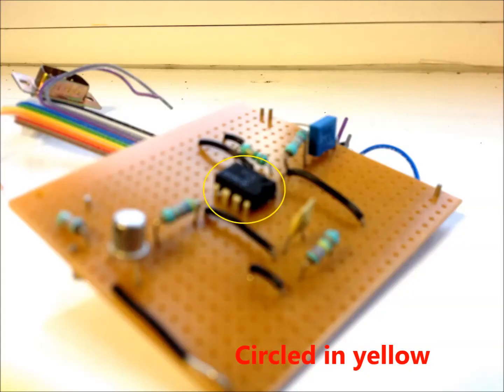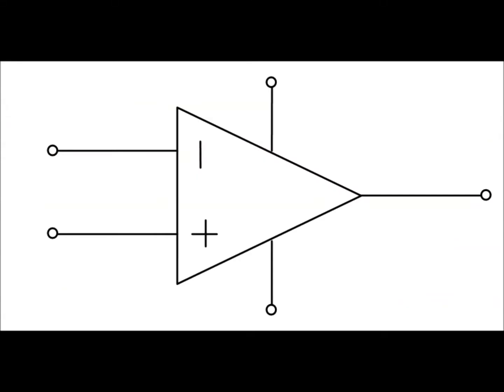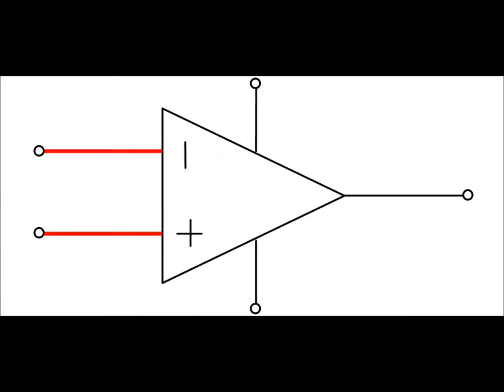This is an operational amplifier. This particular one is the 741 IC chip. The notation for amplifiers looks like this.